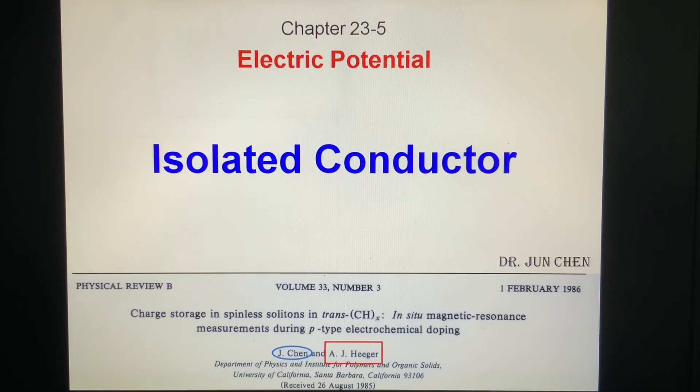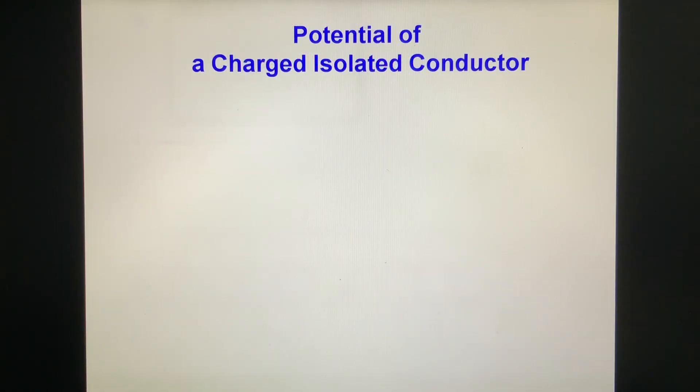Isolated conductor. Potential of a charged isolated conductor. E inside is zero. We have explained it before. If it is not zero, we will see the current inside and it is not true.